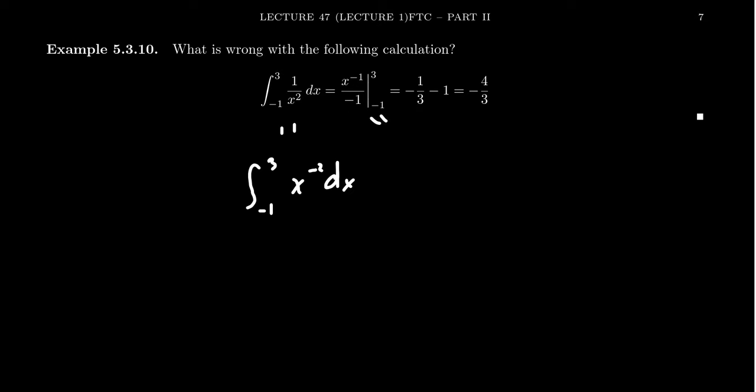Simplifying, that's just the same thing as negative 1 over x, then evaluate from negative 1 to 3. Well, if you plug in 3, you're going to get negative 1 third. If you plug in negative 1, you'll end up with a positive 1, but you're subtracting it.